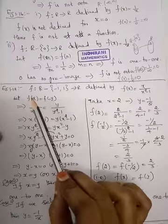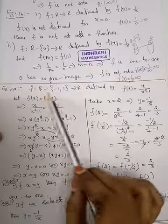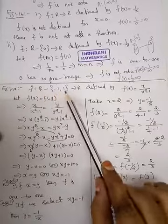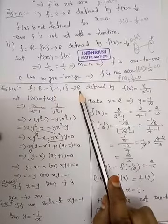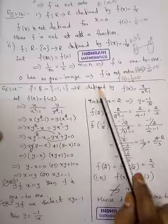Now function f is defined from R minus singleton {-1, 1} to R. That means all the real numbers except minus 1 and 1 go to all of R. The co-domain is R, defined by f(x) is x by x squared minus 1.